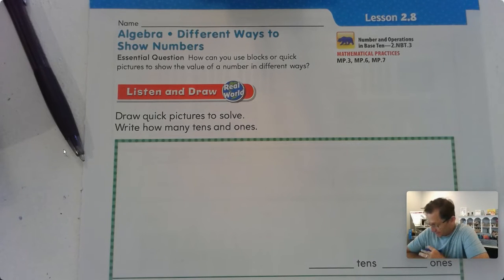Listen to this situation. We're going to draw quick pictures to solve the scenario. Mrs. Peabody has 35 books on a cart to take to classrooms. She can use boxes that each hold 10 books. She can also place single books on the cart. What are two different ways she can put the books on the cart?